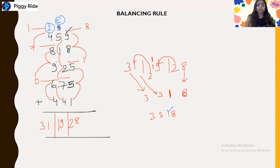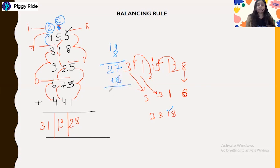With carry 2: 6 plus 4 is 10, 10 plus 9 is 19, 19 plus 9 is 28, 28 plus 8 is 36, but wait — 27 plus 4 is 31, and with the carry 2 we have 33. So the answer is 3318 — that is three thousand three hundred and eighteen. The answer is confirmed correct. Let's take another question.